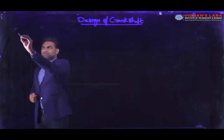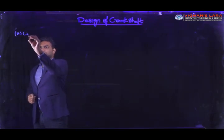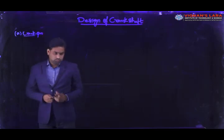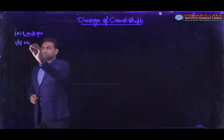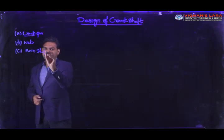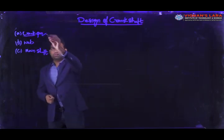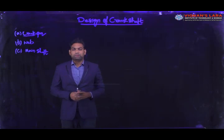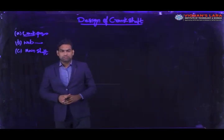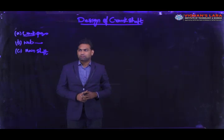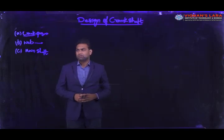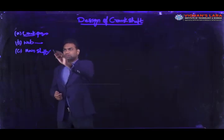The crankshaft has three main parts: the crank pin, the web, and the main shaft (or main journal). The crank pin is where the connecting rod connects. The web connects the crank pin to the main shaft. The main shaft rotates inside the main journals of the engine.